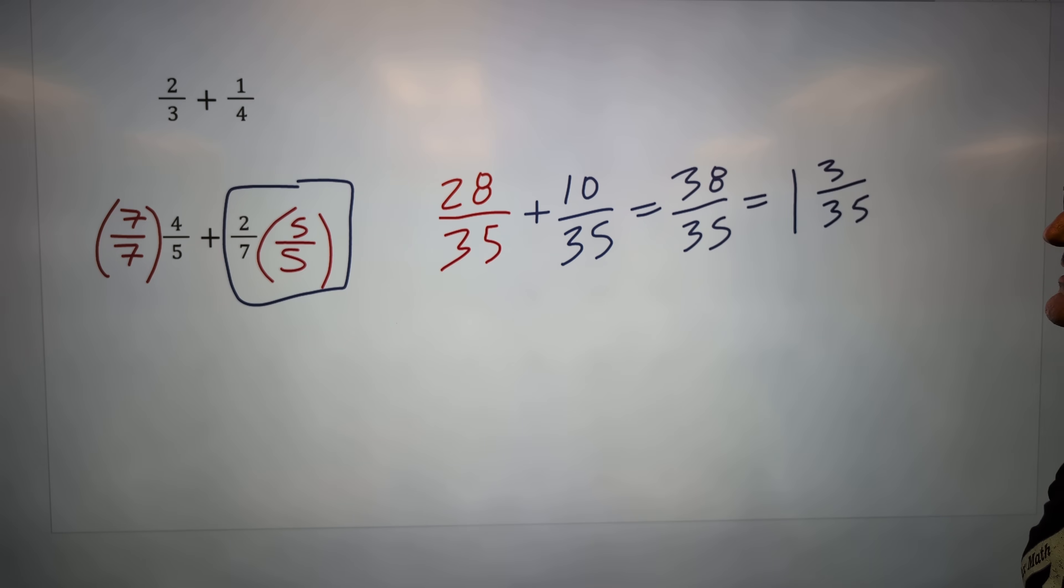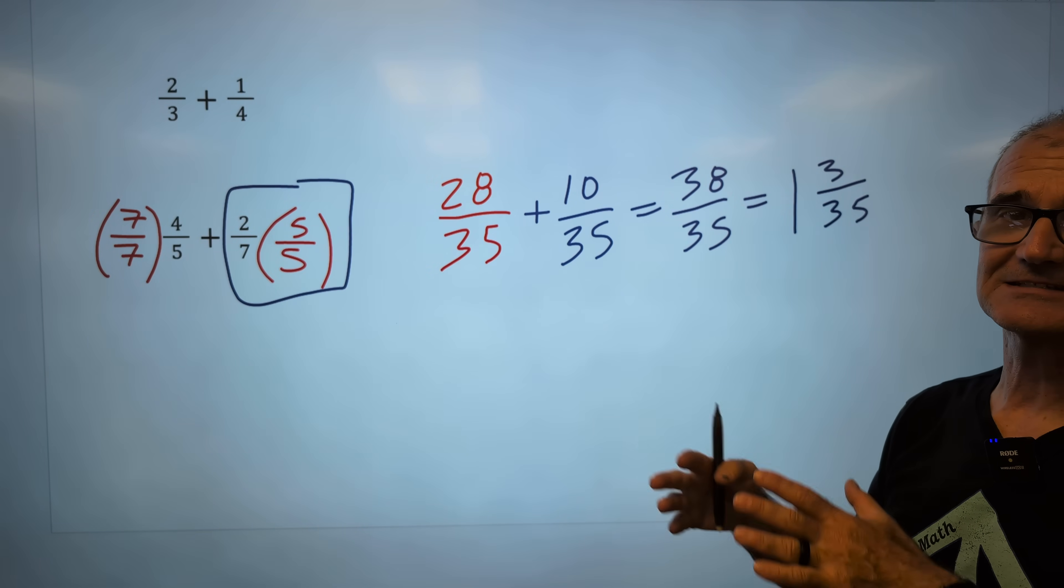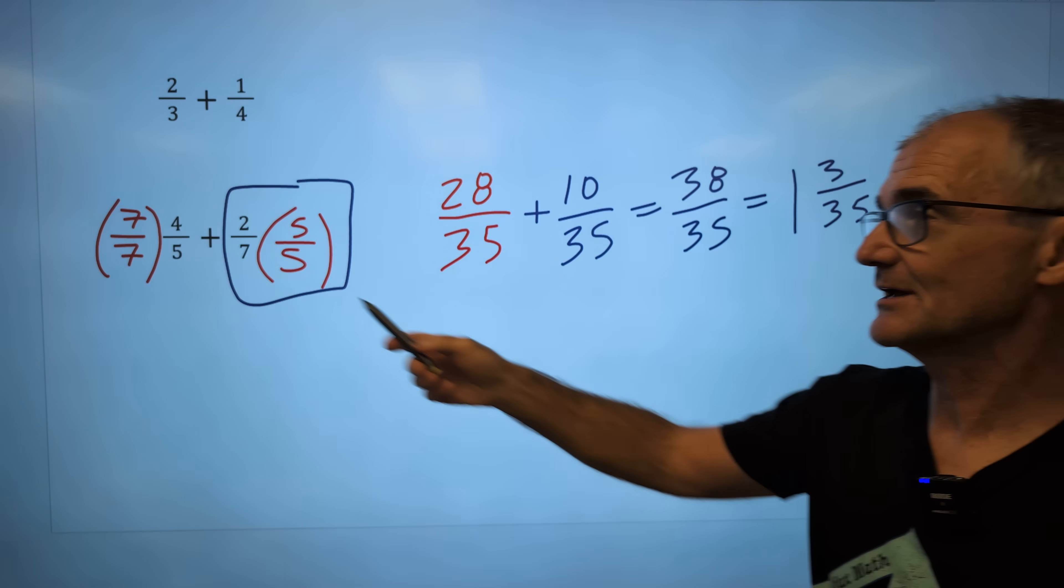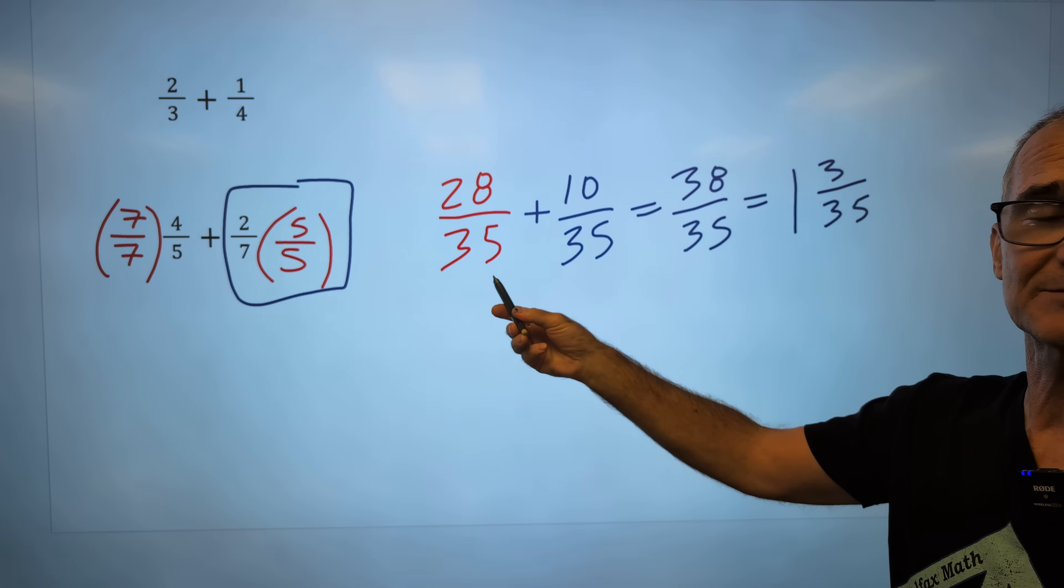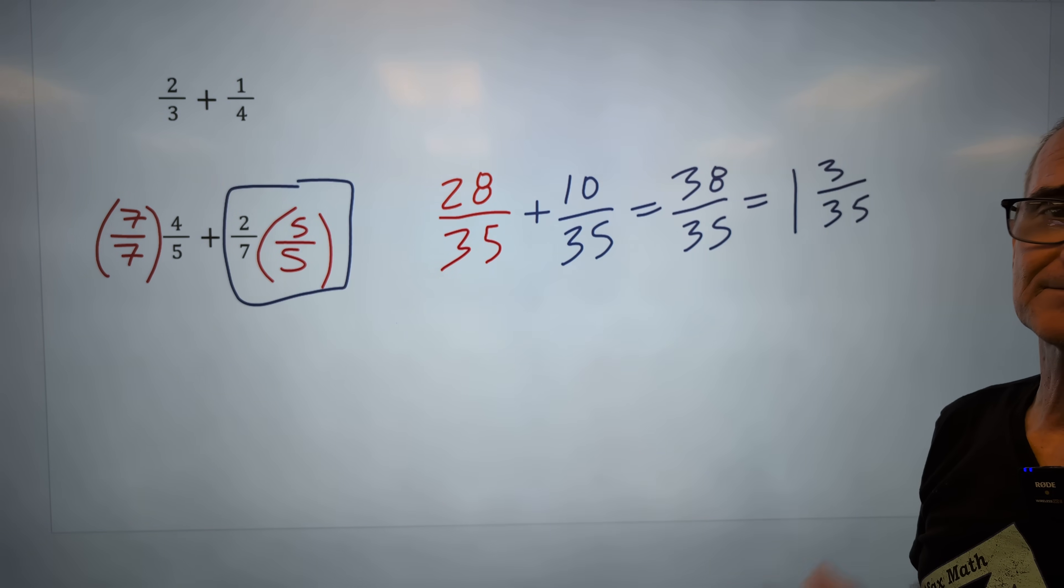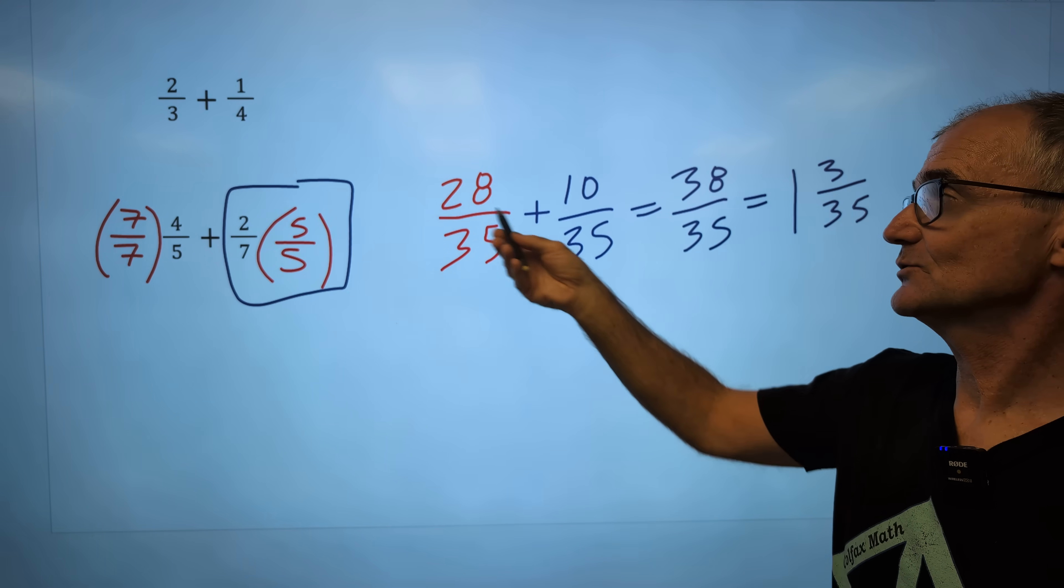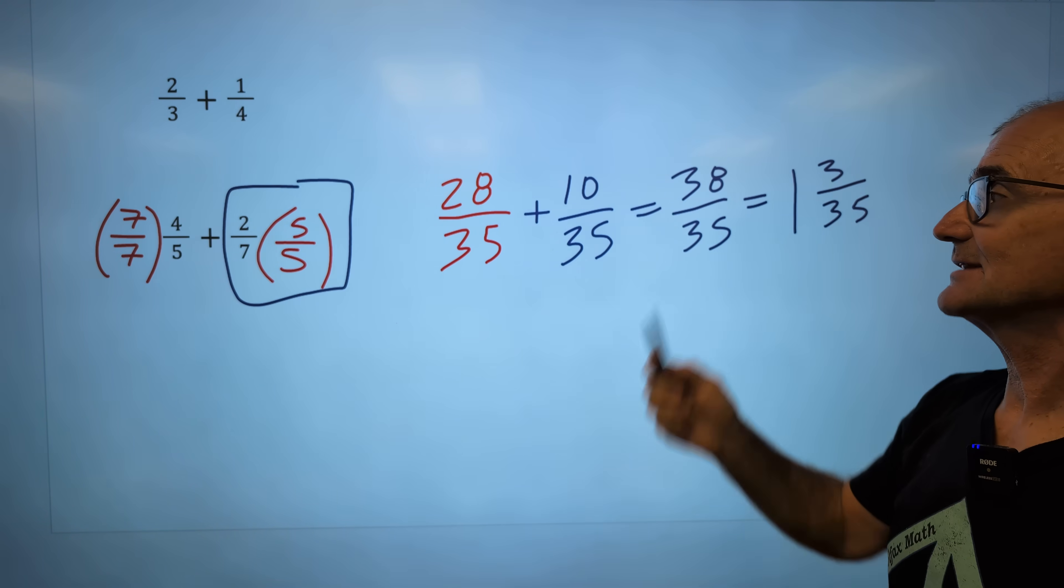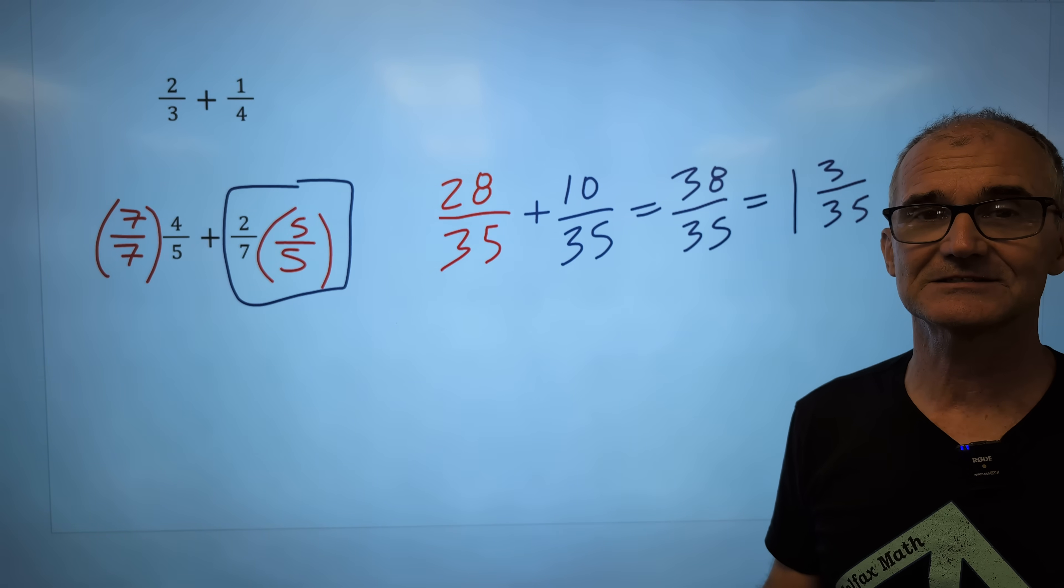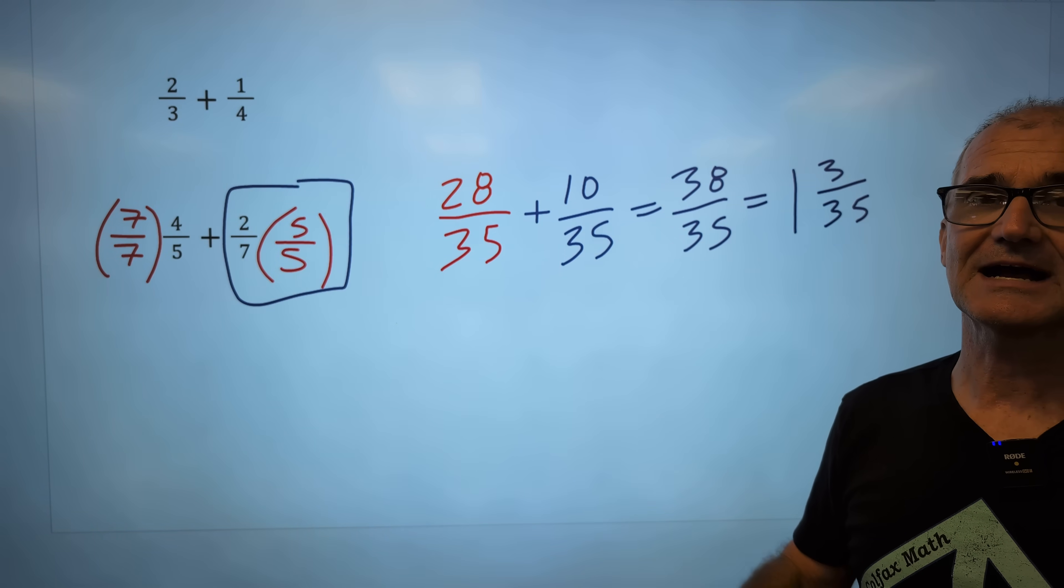Again, they are equivalent. They are both correct. Hopefully that was helpful on how to add fractions. Adding fractions is actually the hardest part of fractions because you have to have that common denominator. So you have to multiply by factors of one to get that common denominator. Once you do that, add across the top, keep the bottom the same, then simplify. Subtraction is exactly the same. You would just, if this were subtraction, 28 minus 10, and your bottom stays the same. Thanks for watching. Hopefully that answered any questions you have on how to add fractions. It is really a key concept for any standardized math exam.